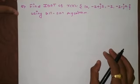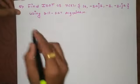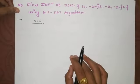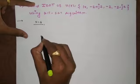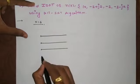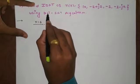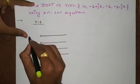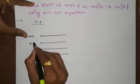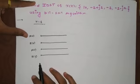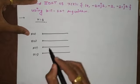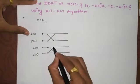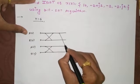The question is: find IDFT of the given sequence using DIT-FFT algorithm. This is a 4-point problem, meaning the number of samples is 4 and it will be a two-stage decimation. We draw four lines. For decimation in time, we divide the given sequence into even and odd samples: x(0), x(1), x(2), x(3) becomes x(0), x(2), x(1), x(3), forming groups of even and odd samples with mappings between them.